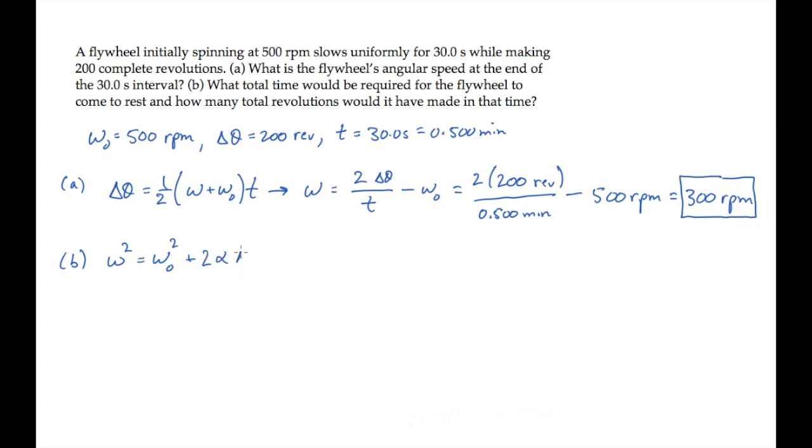Solve this for alpha. Substituting the known values from the 30 second time interval. And calculate to find that alpha is minus 400 revolutions per minute squared.